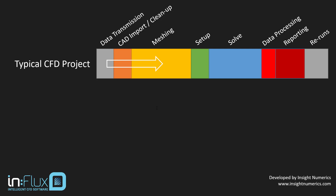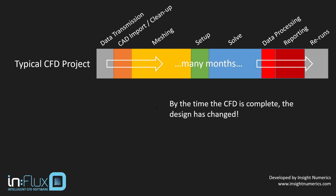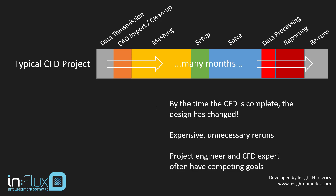Of course, the weighting of each task varies between projects, but the whole process typically takes many months, and by the time the project is complete, it is often the case that the design has changed and much of the work needs to be redone. In addition, there is the constant problem of communication between the project engineers on one side and the CFD experts on the other, who often have different goals for the CFD work.